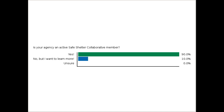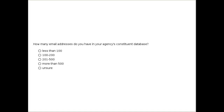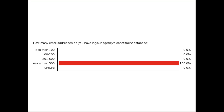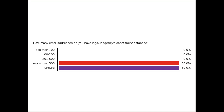One more quick question before I turn it over to Michael: how many email addresses does your agency have representing your constituent database? Do you have less than 100, 100 to 200, 201 to 500, more than 500, or are you unsure? It's perfectly fine if you're unsure, because Michael is going to be addressing this when he talks about developing and sustaining your donor base — we just wanted to have an idea of the range. Thank you so much for answering those questions.